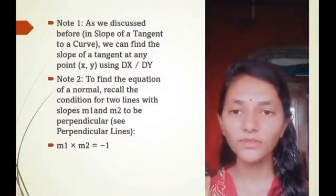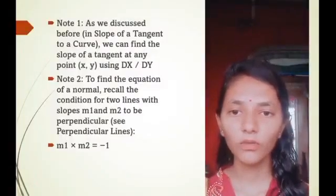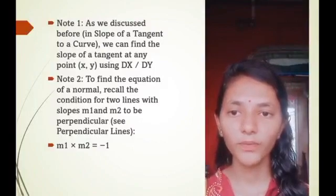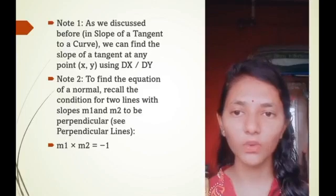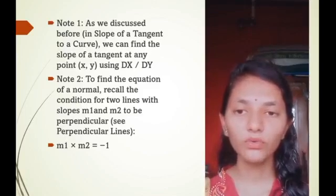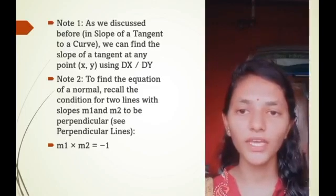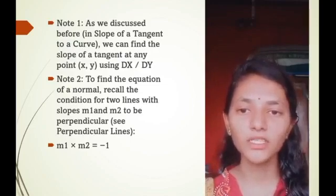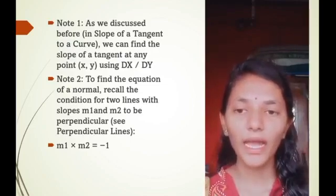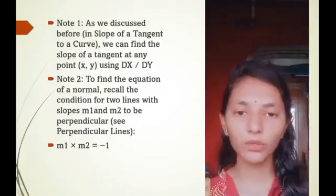Note 1: As we discussed before, in the slope of tangent to a curve we can find the slope of tangent at any point (x,y) using dy/dx. Note 2: To find the equation of a normal we recall the condition for two lines with slopes m1 and m2 to be perpendicular. See perpendicular lines: m1 × m2 = -1.